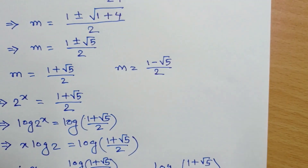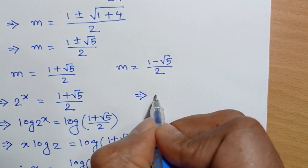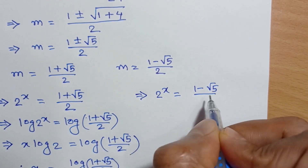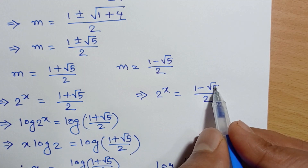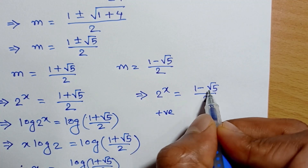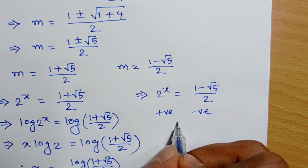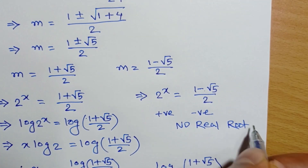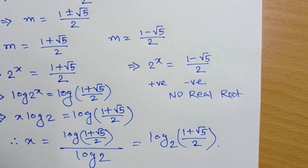For m = (1 − √5) / 2: since √5 is greater than 1, then 1 − √5 is a negative number. But 2 to the power x is always positive, and (1 − √5) / 2 is negative, so there is no real solution for this case. Therefore the only solution is x = log((1 + √5) / 2) / log(2). Thanks for watching.